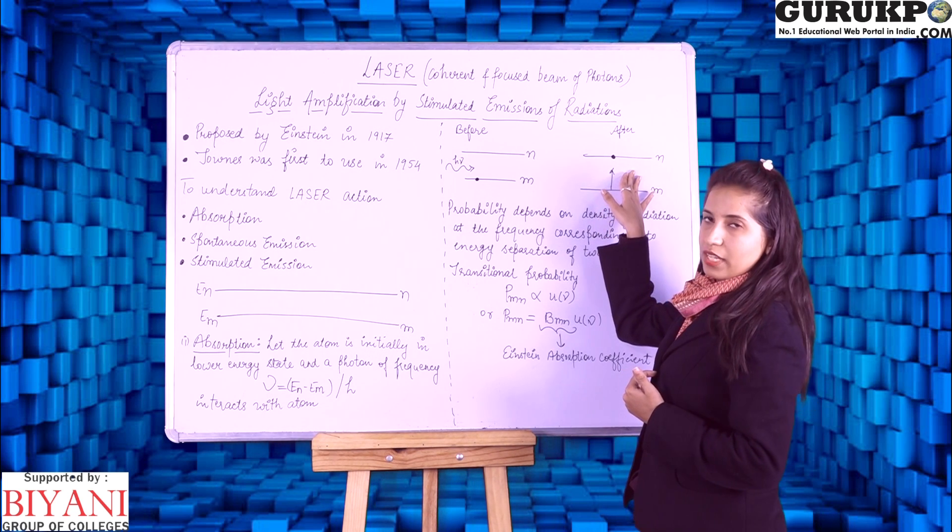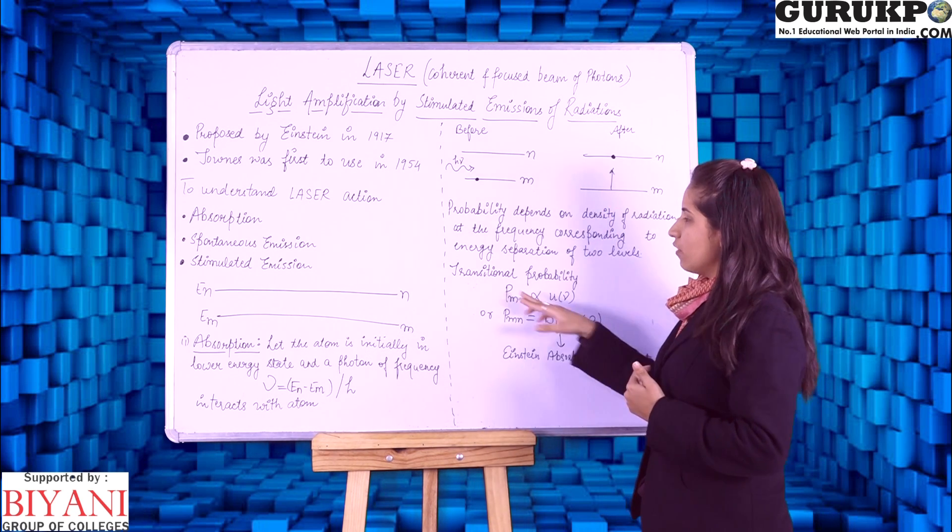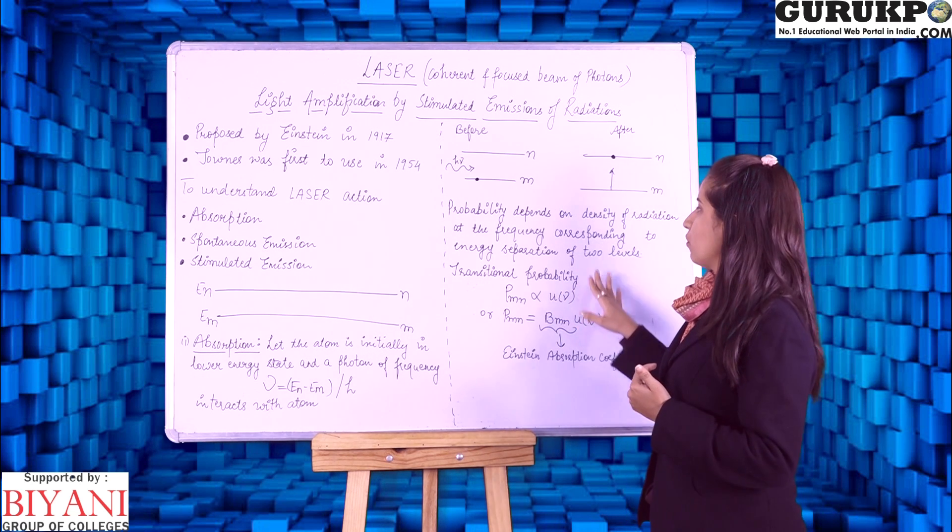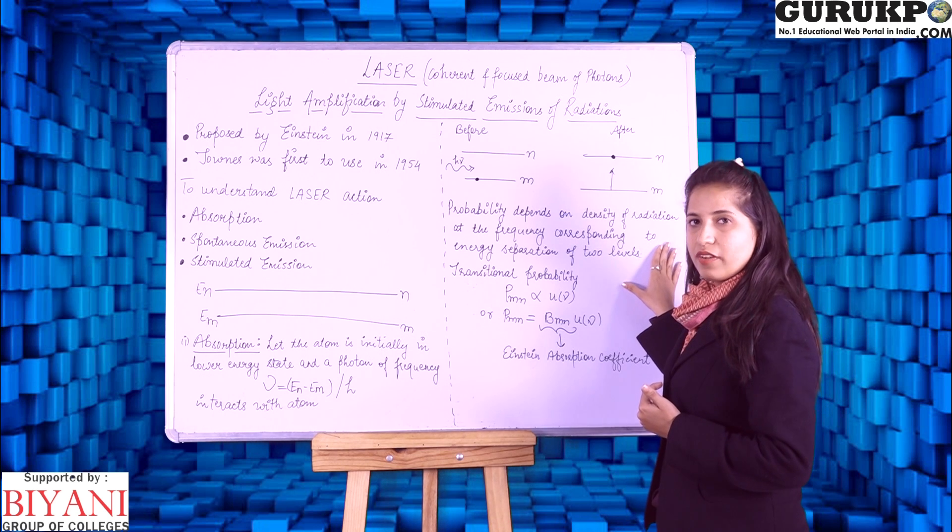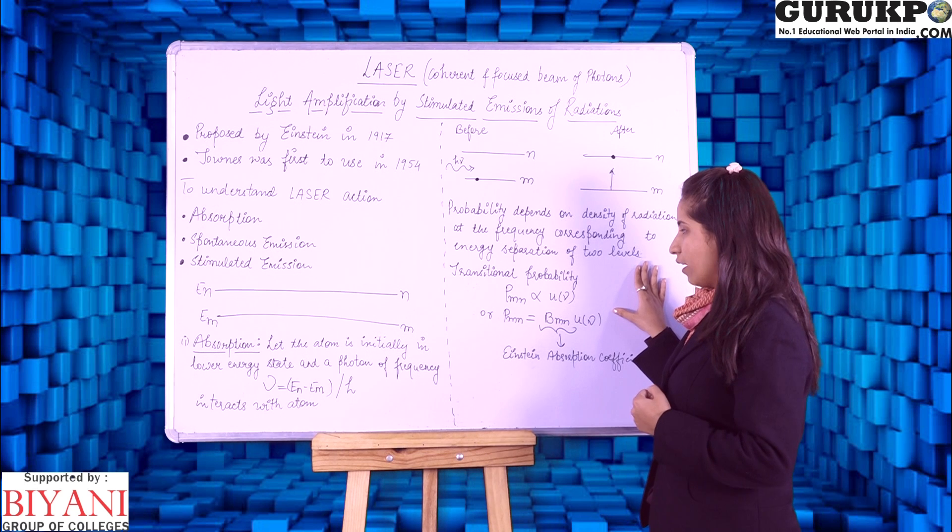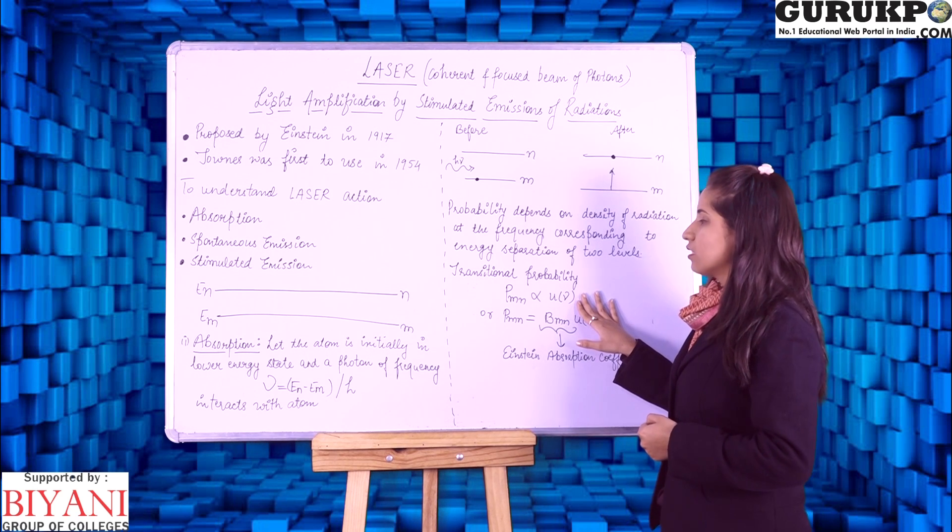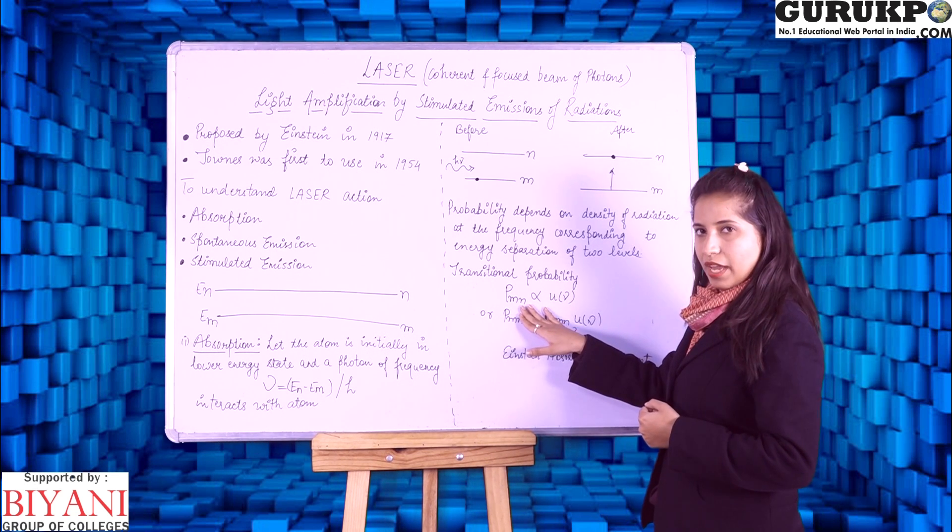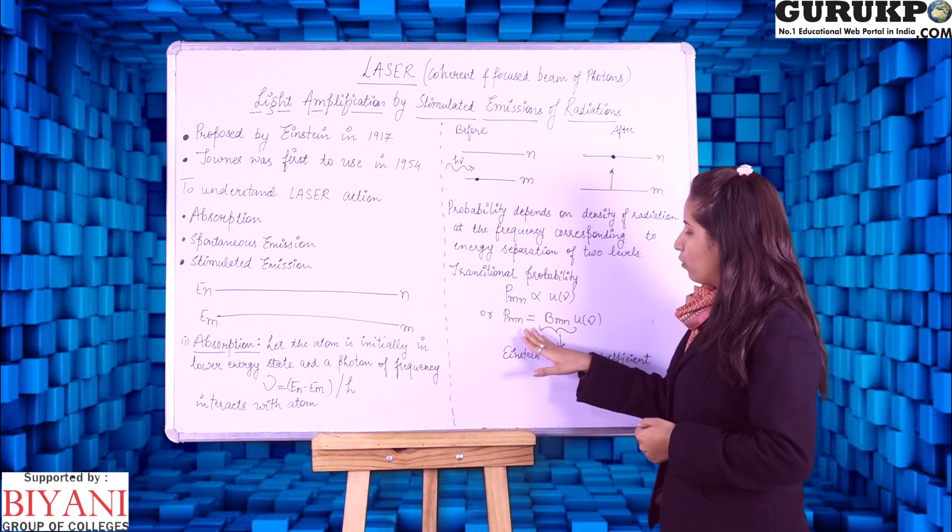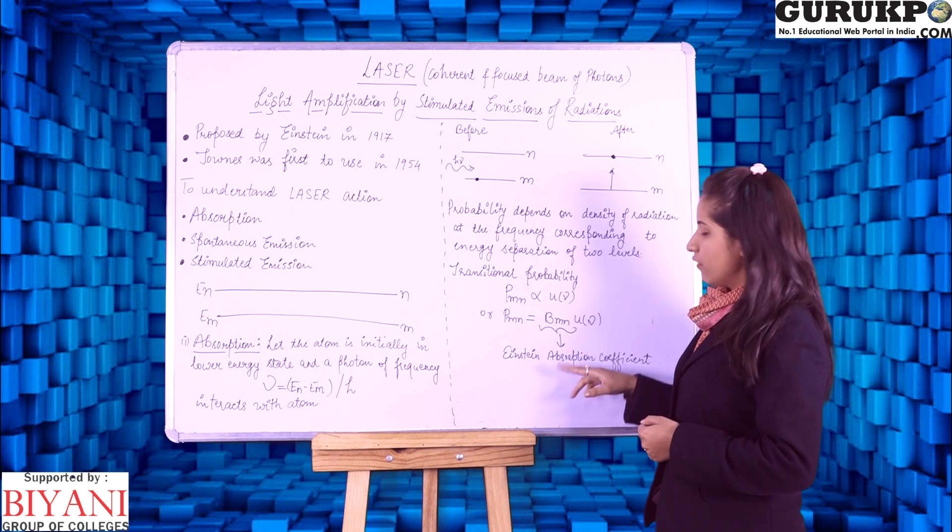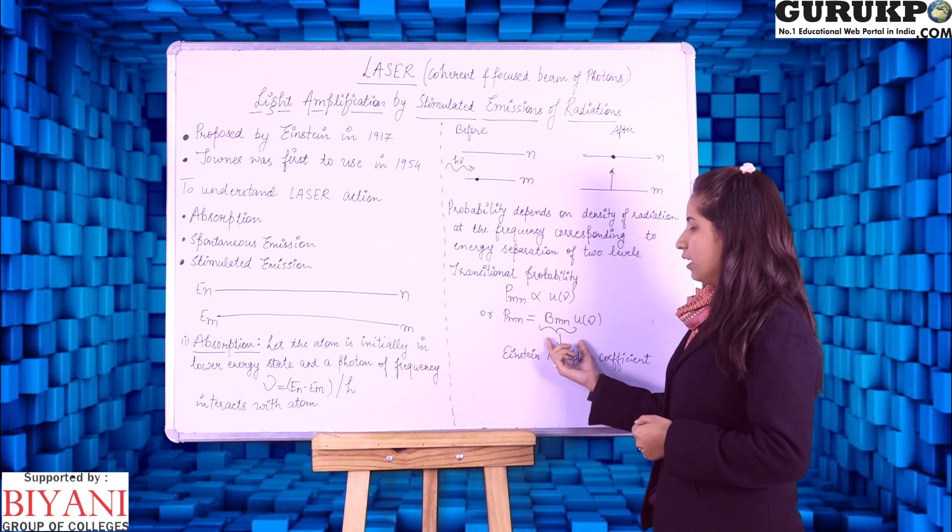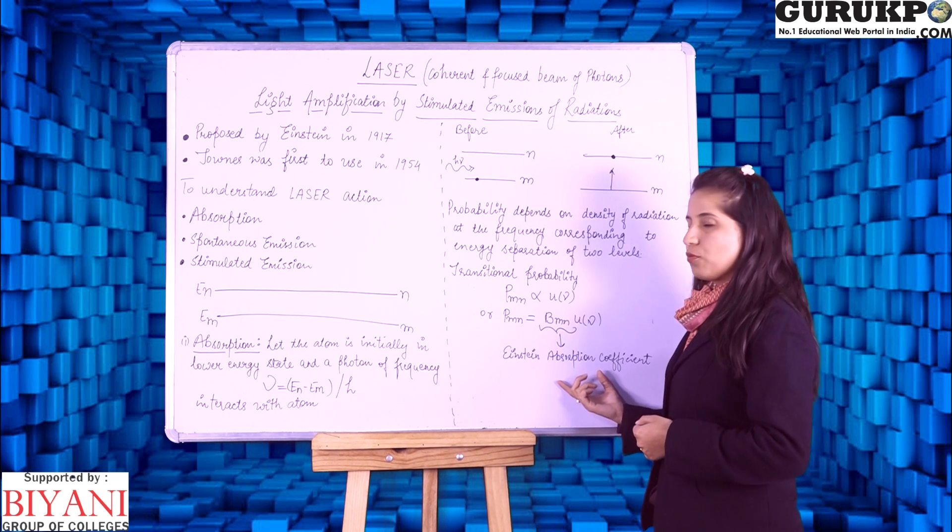For this there is a some transition. So for transition we have some transition probability also. And this transition probability depends on density of radiations at the frequency corresponding to energy separation of two levels. And this is denoted by PMN which is proportional to the density that is u nu. And the proportionality constant here is given by Einstein absorption coefficient. So BMN here is Einstein's absorption coefficient.